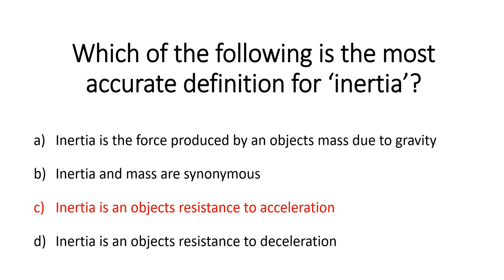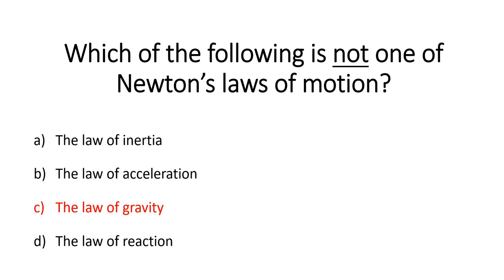Which of the following is not one of Newton's laws of motion? Was it the law of inertia, acceleration, gravity, or reaction? The answer was C, the law of gravity. Newton's original laws were stated as three: the law of inertia, the law of acceleration, and the law of reaction. The law of gravity was later added as a sort of unofficial fourth law, because Newton's original examples were given in a vacuum of space, which doesn't account for gravity here on Earth. But it was not one of his original laws, so it is the odd one out.